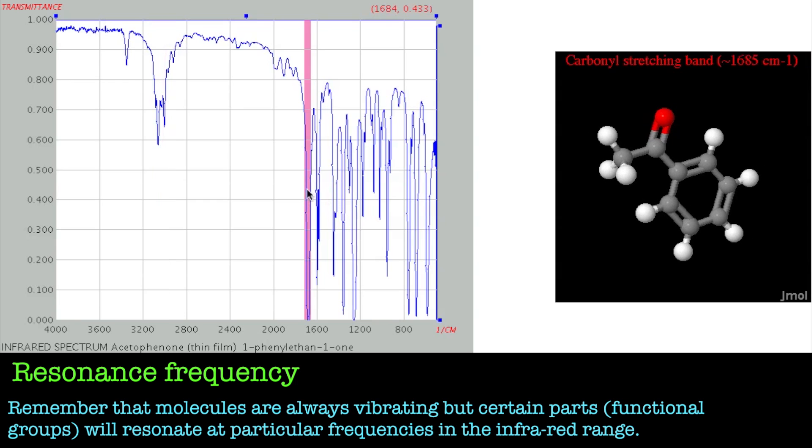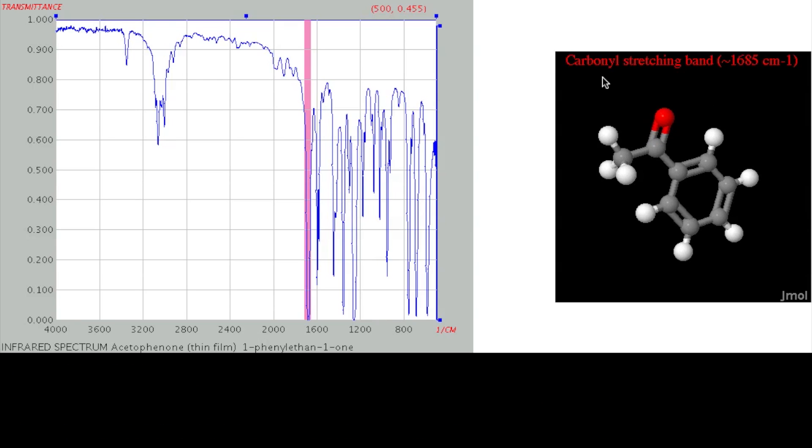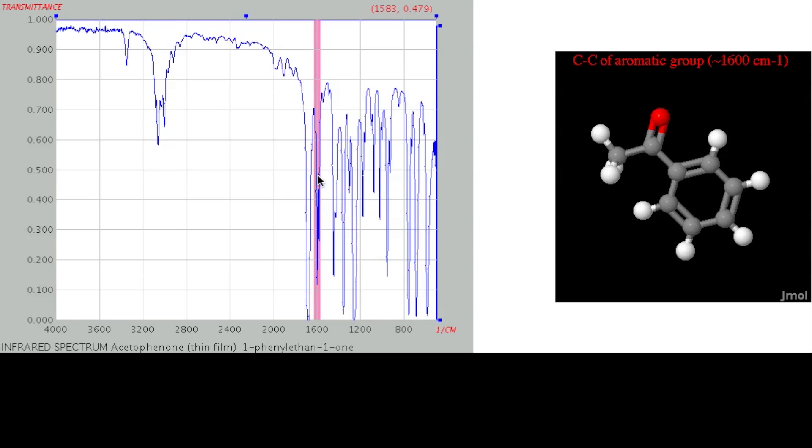And if you look at this peak here, this is characteristic of a carbonyl stretch at 1685, carbonyl next to an aromatic. And it's all annotated as well, so it's carbon-oxygen stretching band at approximately 1685 wavenumbers, and there you can see it vibrating in the JML structure. And then if you go into the fingerprint region, here we've got the carbon-carbon stretches of the aromatics.